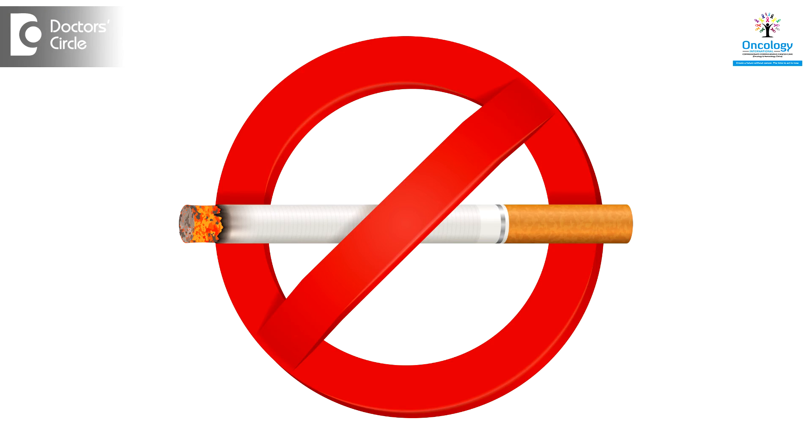Prevention is better than cure. A large component of lung cancer is due to things that can be changed by the individual. Quitting smoking can reduce the risk of developing lung cancer significantly. Many patients work in occupations exposing them to toxic chemicals — changing jobs or using better protective equipment to avoid inhalation of these chemicals can also help prevent lung cancer.